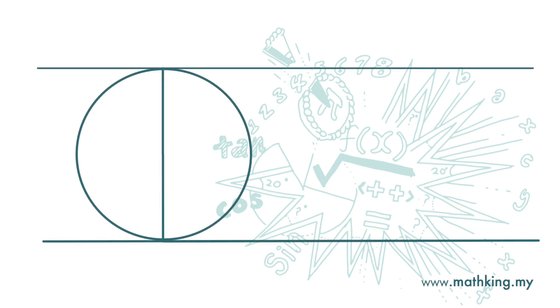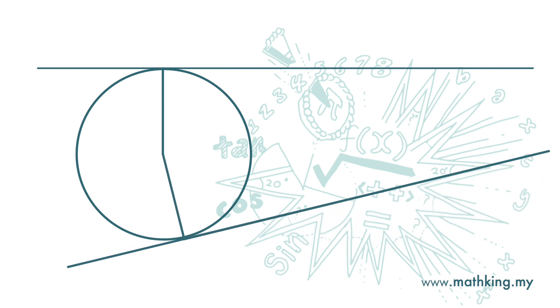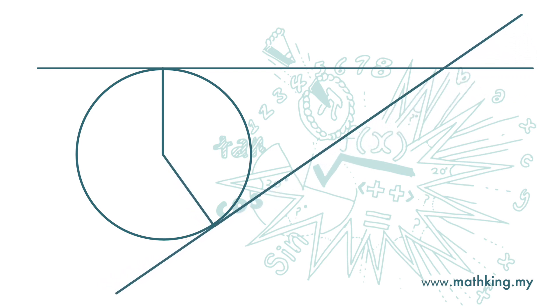Now here we have two tangents to this circle. If I move one of the tangents, these two tangents will intersect and we have a kite.